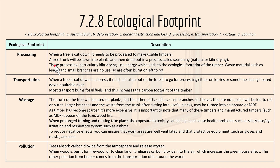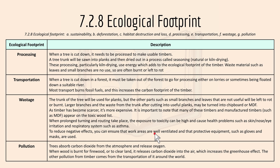Processing: when a tree is cut down, it must be processed to make usable timber. The tree trunk is sawn into planks and then dried in a process called seasoning. Transportation: when a tree is cut down in the forest, it must be taken out for processing, either on lorries or floated down a suitable river. Most transport burns fossil fuels, increasing the carbon footprint. At the waste stage, the trunk is used for planks but small branches and leaves that are not useful will be left to rot or burnt. Larger branches and waste from the trunk may be turned into chipboard or MDF. To reduce negative effects, ensure work areas are well ventilated and use protective equipment such as gloves and masks to prevent respiratory disease or asthma.